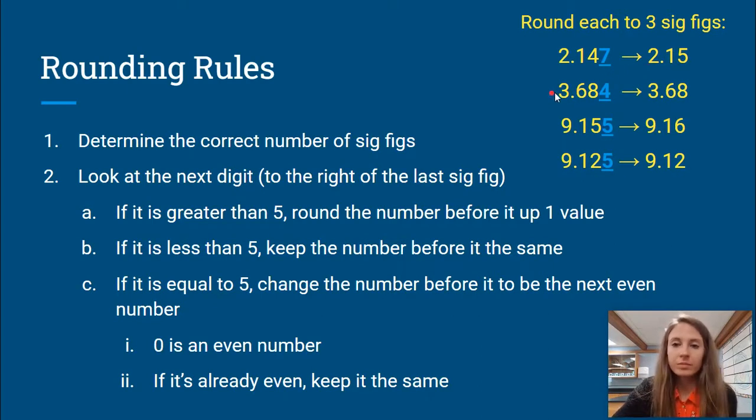Now let's go to the second one. Again, we want three sig figs. So we are going to go from left to right, count three sig figs: one, two, three. So we are going to then look at the next digit for rounding purposes. Now we have a four here, so we are going to follow rule B. If this digit is less than five - so four, three, two, one - you are going to keep the number before it the same. So we are going to keep the eight as an eight.